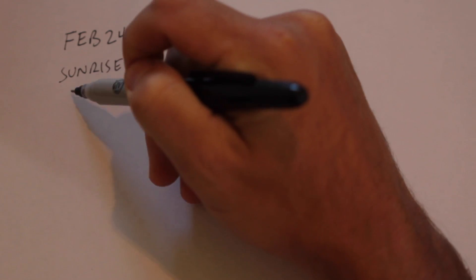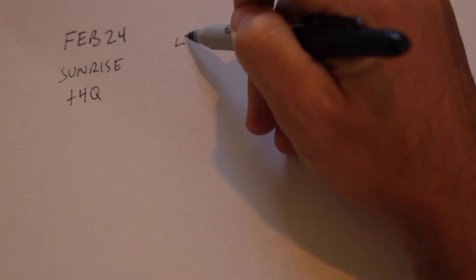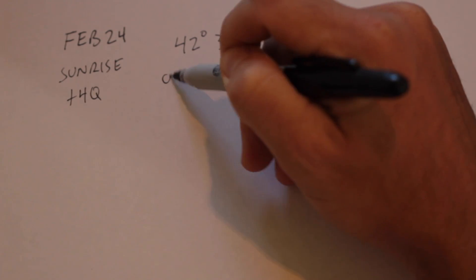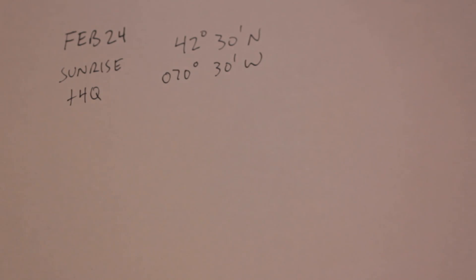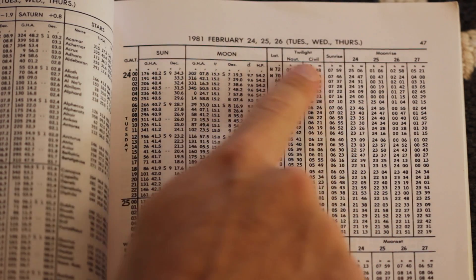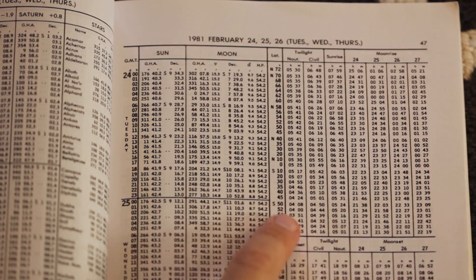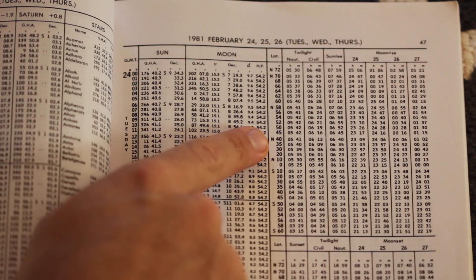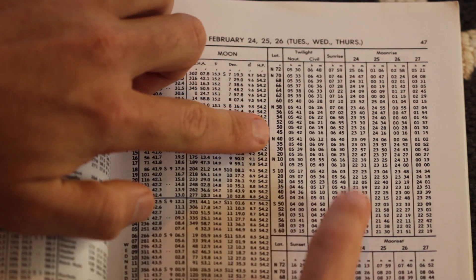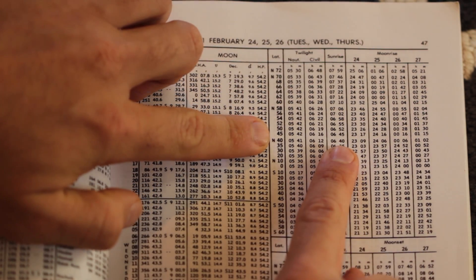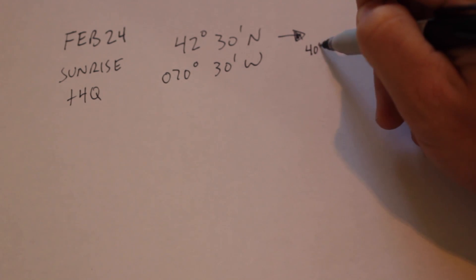For our third example, we are on the same day and same time zone, but our position is not as convenient. We are at 42 degrees and 30 minutes north, and 70 degrees, 30 minutes west. First, we correct for latitude. Since our latitude isn't listed in the Nautical Almanac, we need to interpolate the value, or pick the value that corresponds to our latitude. We are exactly halfway between 40 and 45 degrees north.